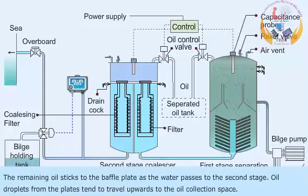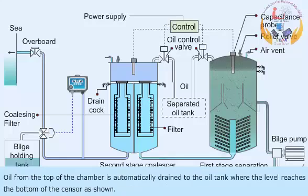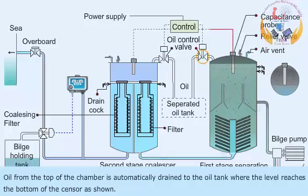The remaining oil sticks to the baffle plates as the water passes to the second stage. Oil droplets from the plates tend to travel upwards to the oil collection space. Oil from the top of the chamber is automatically drained to the oil tank, where the level reaches the bottom of the sensor as shown.